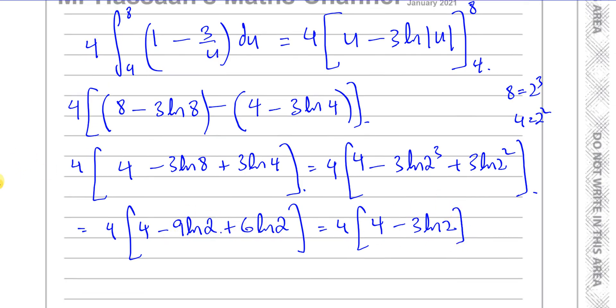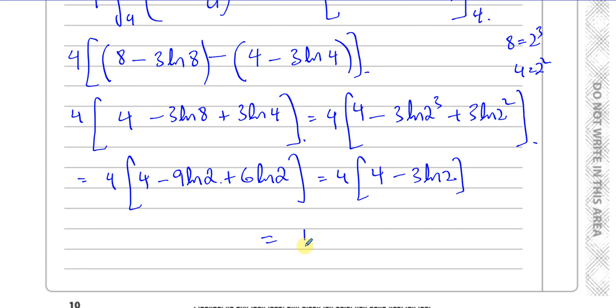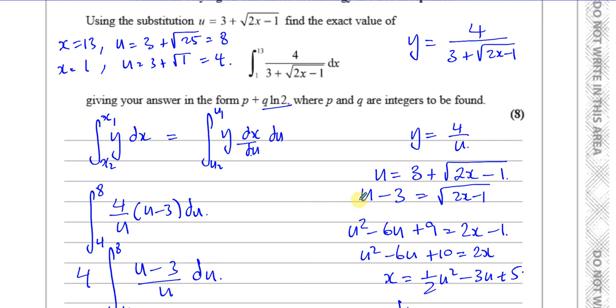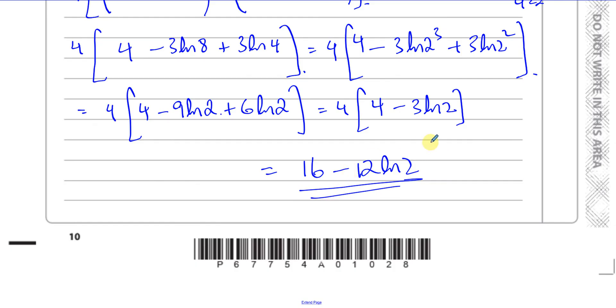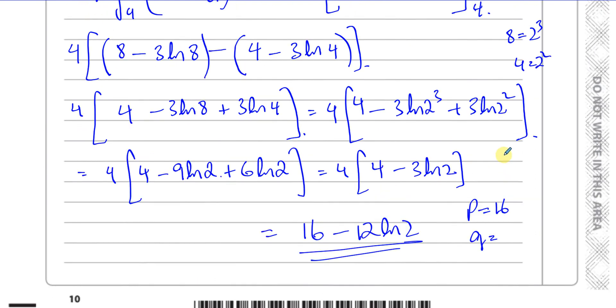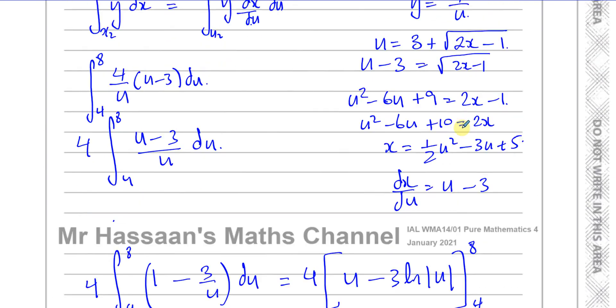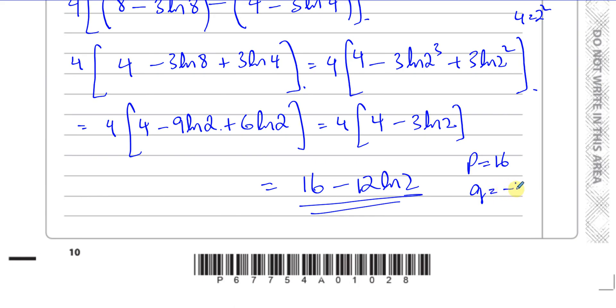So this will give me 4 times 4 minus 3 ln 2 because minus 9 plus 6 is minus 3 of the same thing. That's minus 3 ln 2. And now I can multiply by that 4 outside. I'm going to get 16 minus 4 times 3, which is 12 ln 2. And there is my answer to the question in the form required, p plus q ln 2, where p and q are integers to be found. You could say that means p is 16 and q is equal to minus 12. Those are the values of p and q.